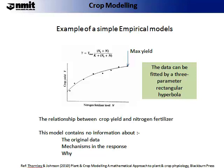The data can be fitted to what is called a three-parameter rectangular hyperbola. On the screen, you will see an arrow which indicates the maximum yield. In this particular model, it is describing the maximum crop yield at any level of a given nitrogen fertiliser.